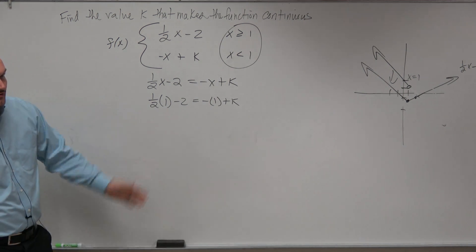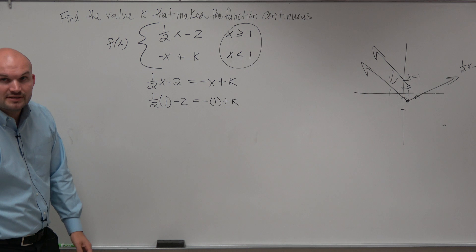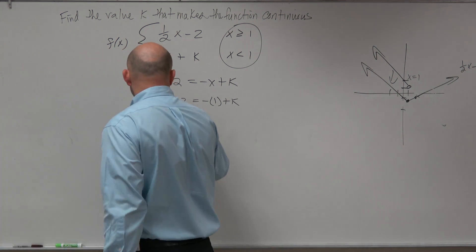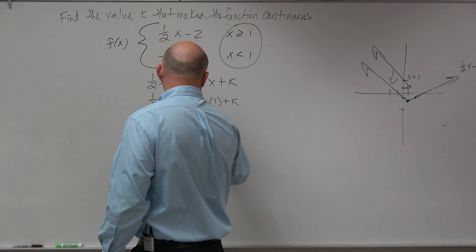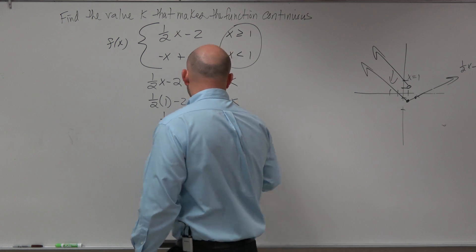So now, all we've got to do is solve for k. And I chose a problem that we have to deal with some fractions because I like you guys that much. So 1 half minus 2 equals negative 1 plus k.